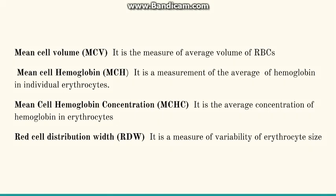Now the various RBC indices — before discussing them in detail, we will briefly introduce them. They are MCV, i.e. mean cell volume, which gives us the measure of average volume of RBCs. Second is MCH, i.e. mean cell hemoglobin, which gives the average hemoglobin present in each RBC. MCHC is the average concentration of hemoglobin present in all erythrocytes volume. Last is RDW, which gives the measurement of variability between erythrocyte size.